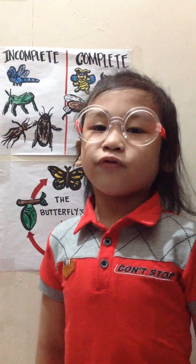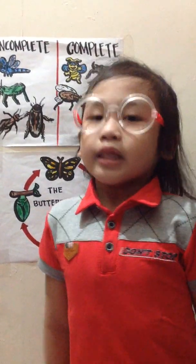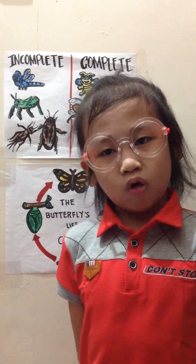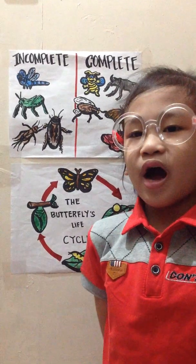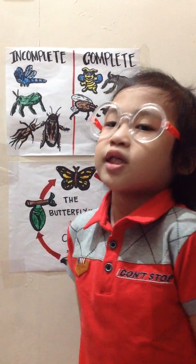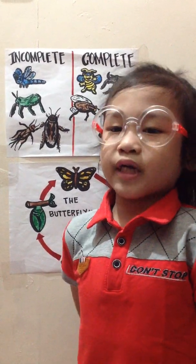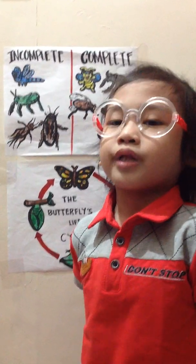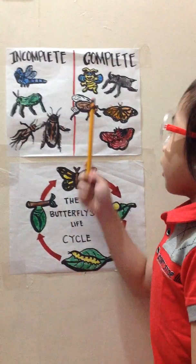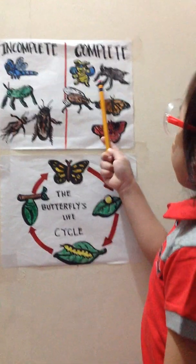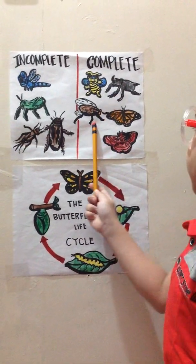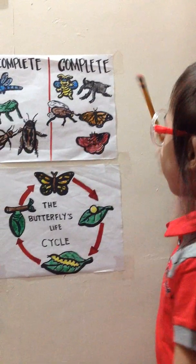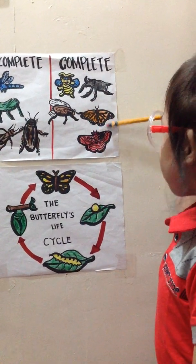For complete metamorphosis, the young is called larva. The young looks different from the adult. Examples: Bee, Beetle, Fly, Butterfly, Moth.